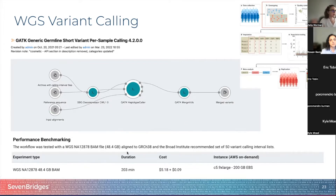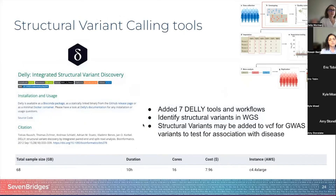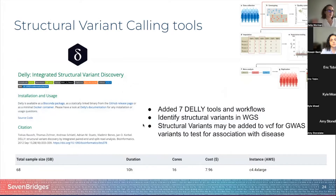We always perform benchmarking on our new tools, and it cost around five dollars and a little over two hours to run this analysis. You can also add structural variants in addition to SNPs and indels, such as polymorphic disposable elements, inversions, and duplications. We added seven DELLY tools used to detect structural variation from whole genome sequencing. The output of these files is also a VCF that you can merge with your GATK output to capture as many variants as possible for a GWAS.